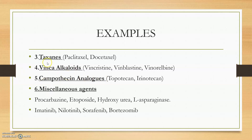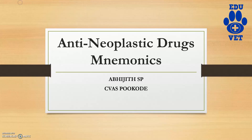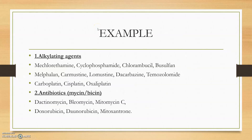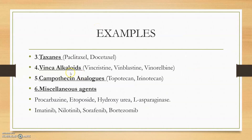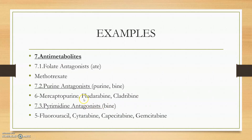The camptothecin analogs include topotecan and irinotecan. Taxanes and camptothecin analogs are the newer drugs. Next are the miscellaneous agents: procarbazine, etoposide, hydroxyurea, L-asparaginase, etc. The others we might have heard in different pharmacology sections.